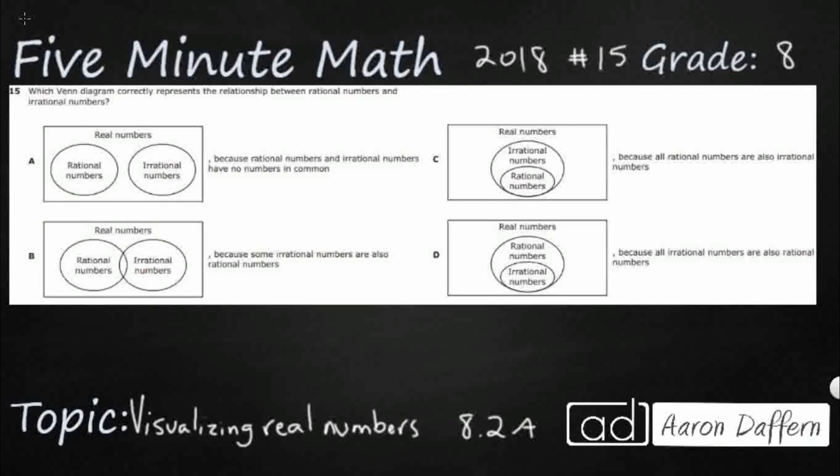So, we have four different Venn diagrams here, and we are looking to correctly represent the relationship between just these two: rational numbers and irrational numbers. Now, what we are not going to get is any definition of either of those, so these are going to be some vocabulary words you are going to need to know going into this particular problem.